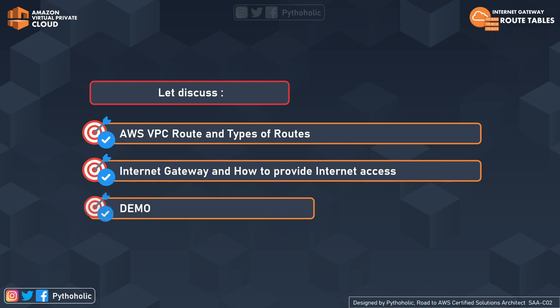In today's session of AWS we will be talking about AWS VPC routing, the important types of routing, what internet gateways are, how we can provide access to the internet, and we will also have a hands-on demo for the same. The timelines are mentioned in the description as well.